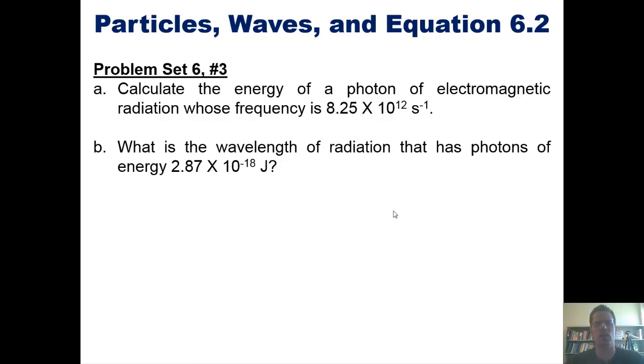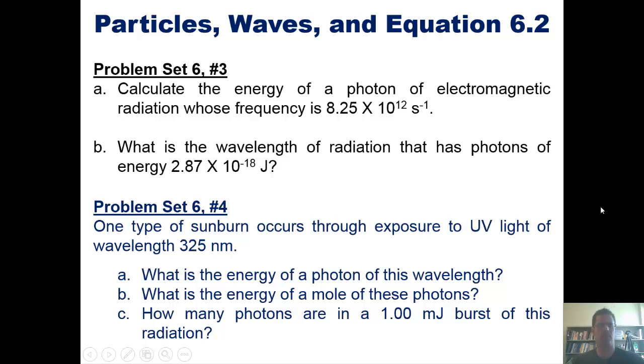In part A it says, calculate the energy of a photon of electromagnetic radiation whose frequency is that crazy number. Part B says, what is the wavelength of radiation that has photons of energy that number of joules there. And another problem reads, one type of sunburn occurs through exposure to UV light of wavelength 325 nanometers. What is the energy of a photon of this wavelength? What is the energy of a mole of such photons? And how many photons are in a one millijoule burst of this radiation? Now I'm not going to do these problems in this video, but I will post a link somewhere on this slide which if you click on will take you to a separate video in which I've worked these out.